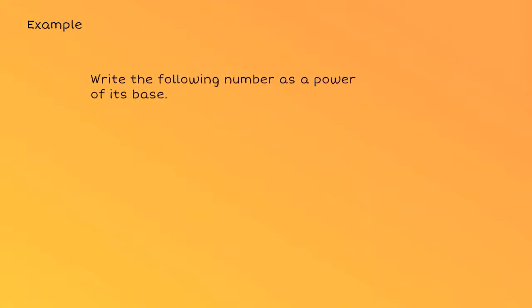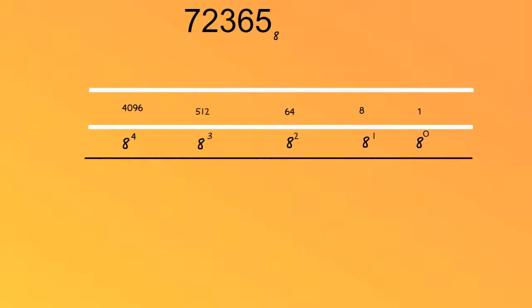Here's another example. Write the following number as a power of its base. In the base 8 place value system, we count in multiples of 8. So if I place my number in the place value column, then I can write it in expanded form like this.